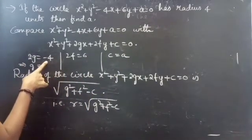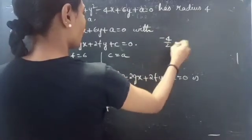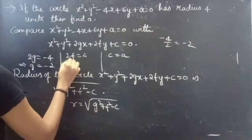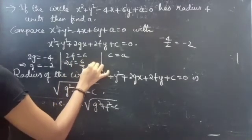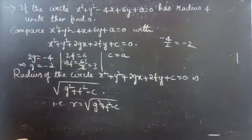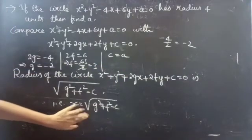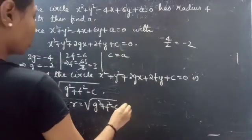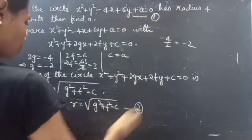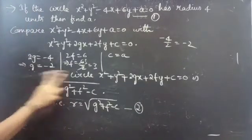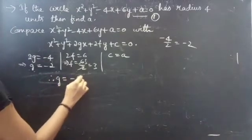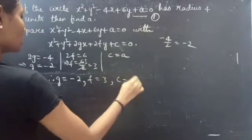From this we get g = -4/2 = -2, and f = 6/2 = 3. So we have g = -2, f = 3, and also c = a. Therefore, g = -2, f = 3, c = a.